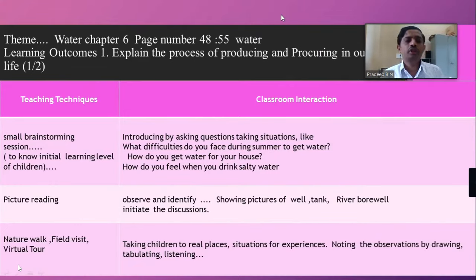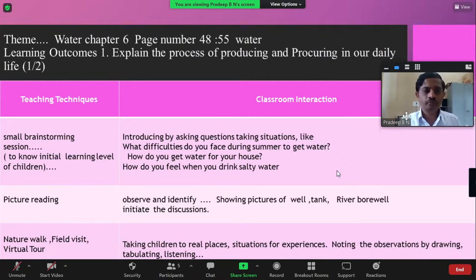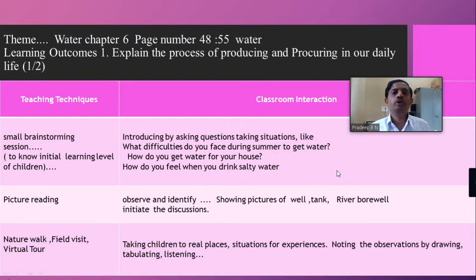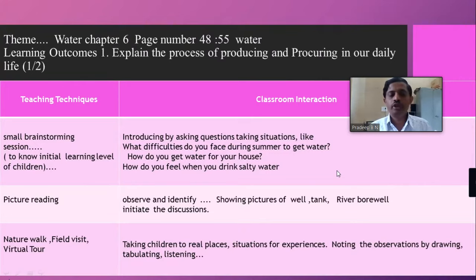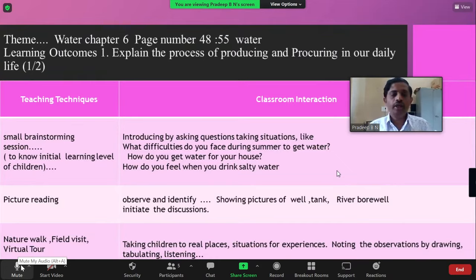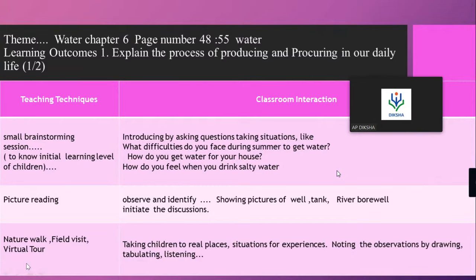I would like to bring in some interventions I have discussed on a lesson called 'water' from your textbooks. You can open pages 48 to 55 and see this theme. The name of the lesson is also 'water.' I can define the learning outcomes in the beginning — like 'explain the process of producing and procuring water in our daily life.' Based on this learning outcome, it is beautifully given in the textbook. They have introduced the topic by interaction of children — Latha, Nikita, and Ravi — interacting with each other.